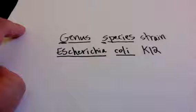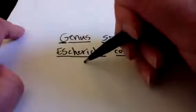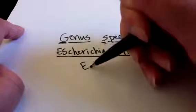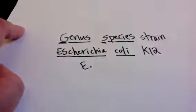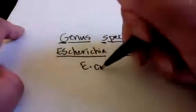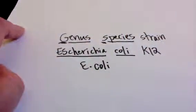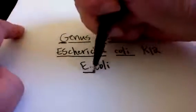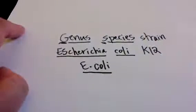The other thing that we see a lot is once we've written out the name fully once, we can abbreviate it. We abbreviate it by using the first letter of the genus with a period, and then the species that we write out. We also want to italicize or underline that name as well.